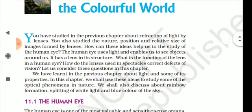You have studied in the previous chapter about refraction of light by lenses. We also studied the nature, position, and size of the image formed by lenses. If it was beyond the x-axis it was real and inverted, but if it was behind the lens or mirror it was virtual and erect. The sizes ranged from small diminished to a point-sized object, enlarged, to highly enlarged at infinity.